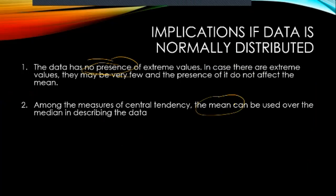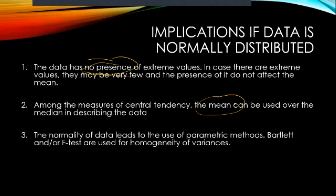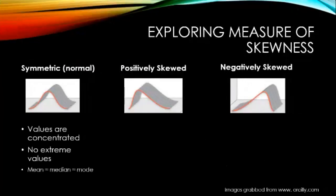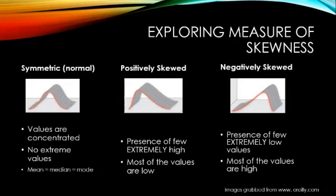If data is normally distributed, we use the mean over the median. Normally distributed data has no presence of extreme values, and normality leads to the use of parametric methods. If data is not normally distributed, we use non-parametric methods. Regarding skewness: symmetric data is the same as normally distributed — no extreme values and mean, median, and mode are close together. For positively skewed data, there is presence of extremely high values; for negatively skewed data, extremely low values. For symmetric data we use the mean; for positively or negatively skewed data, we use the median.